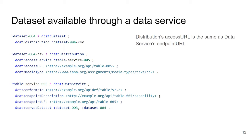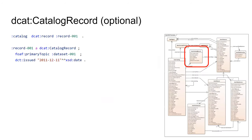The catalog record class is optional. If you want additional metadata about the act of entering a dataset into a catalog, you can have an instance of a catalog record which points to the dataset using foaf:primaryTopic. You can then record the date the dataset was added to the catalog. That is the catalog record.